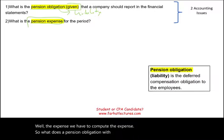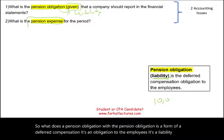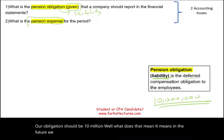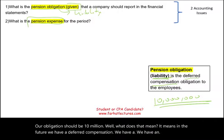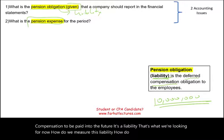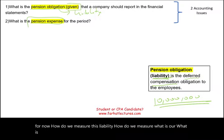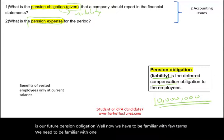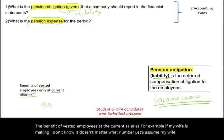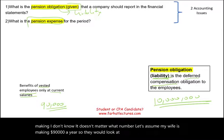The pension obligation is a form of deferred compensation — it's an obligation to the employees, it's a liability. When they tell us our obligation should be $10 million, it means in the future we have a deferred compensation to be paid. Now how do we measure this liability? One way is to look at the benefit of vested employees at the current salaries. For example, if my wife is making $90,000 a year, they would look at her salary and calculate from there.